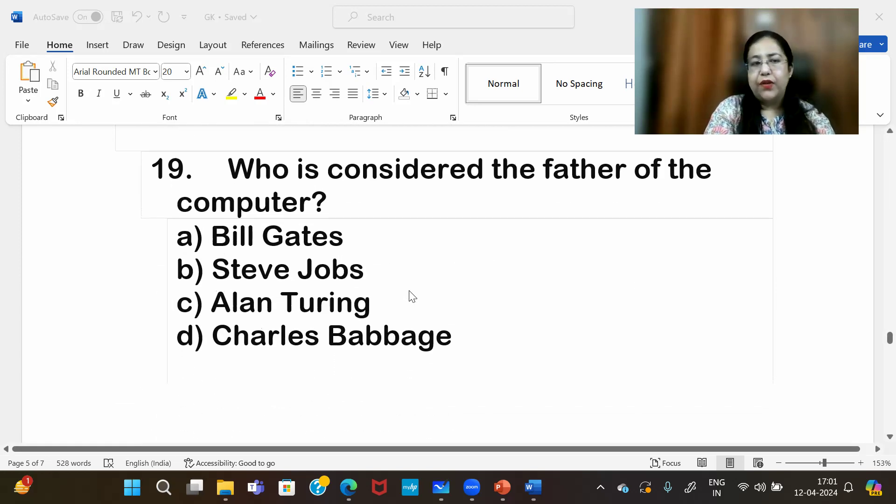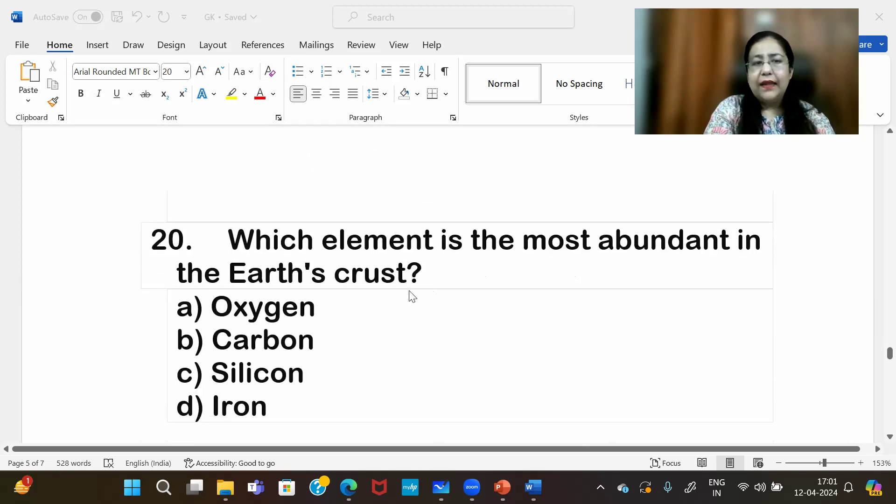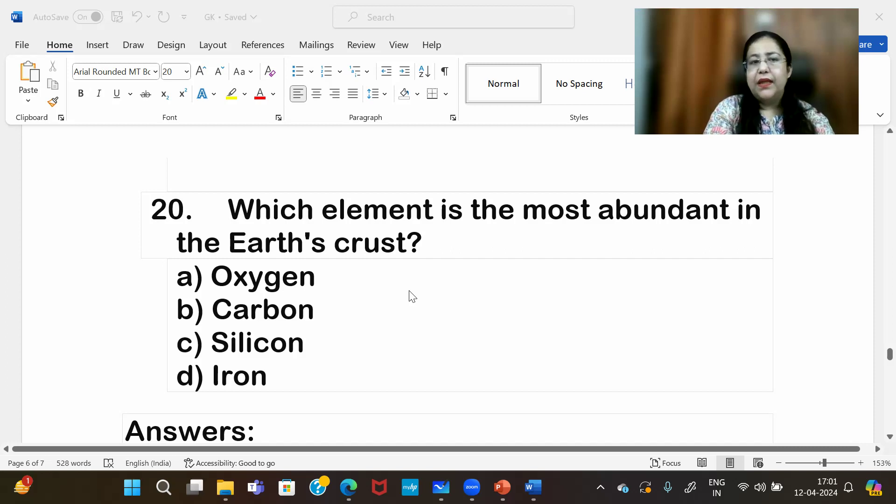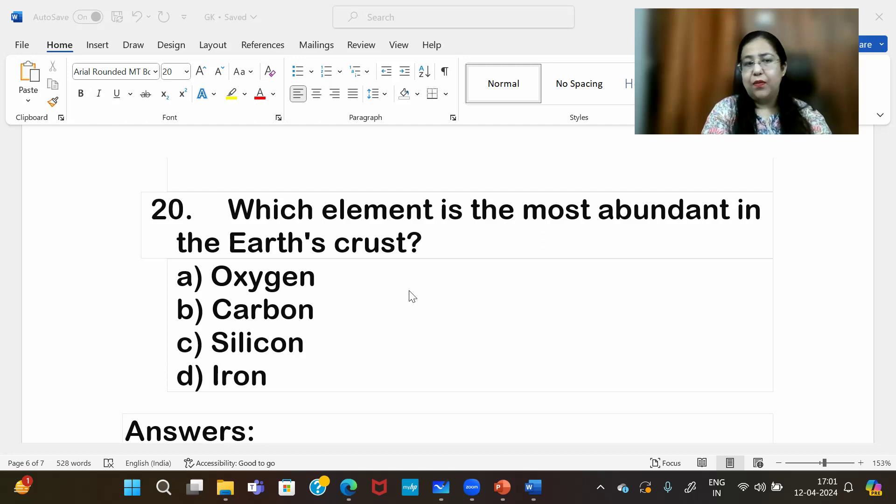Who is considered the father of the computer? This is Charles Babbage. And the last question for today: which element is most abundant in the Earth's crust? The answer is oxygen.